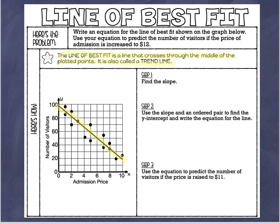We can use this trend line to write an equation for the relationship. This takes us back to writing linear equations in slope-intercept form: y equals mx plus b. First, we want to pick out two really good points that are on the trend line. These points do not have to be points that were on the scatter plot — you're just looking for points on the trend line.